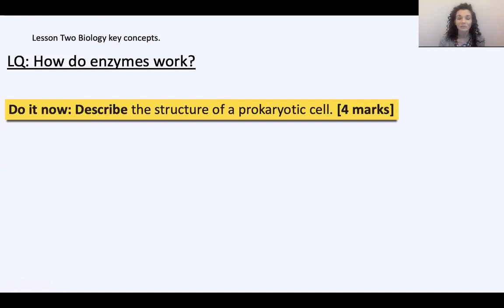The 'do it now' is a little bit of revision from last lesson. Describe the structure of a prokaryotic cell. This is worth four marks, so you need to make four separate points. Hopefully you can all remember — pause the video now and have a go at that question.